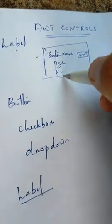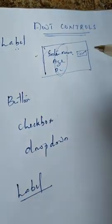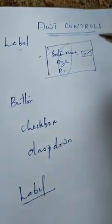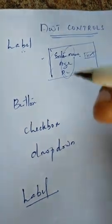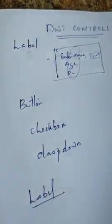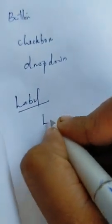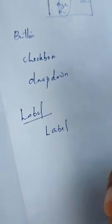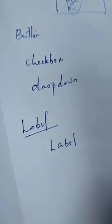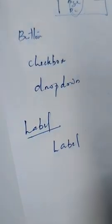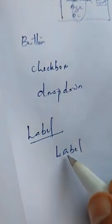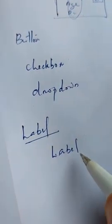Then you can use the label here in the form. We will use this class as a label. In this class, there are 3 constructors.